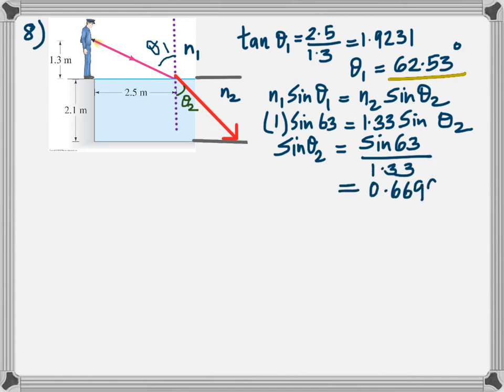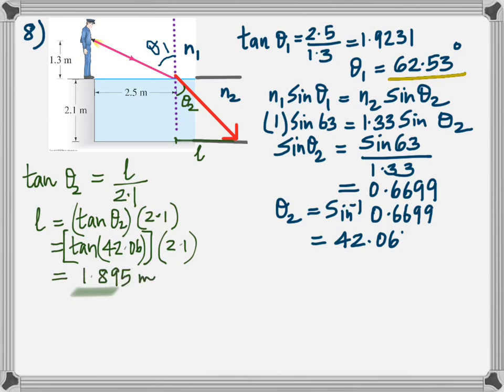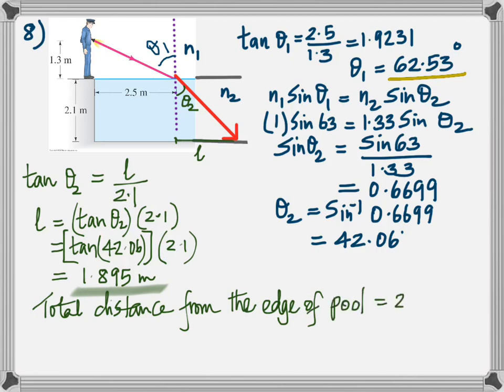And once you have those two angles, once you have theta 2, basically you can calculate the distances. So from that figure now, tan theta 2 is L by 2.1. So you get L from there. And once you get that, you just have to add it to 2.5 to find the total distance from his feet, which is from the edge of the pool. 4.39 meter is what you get.